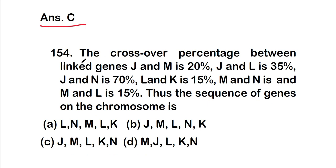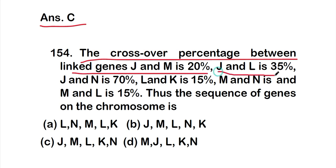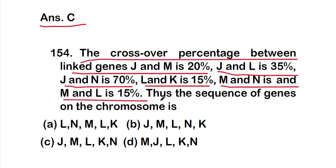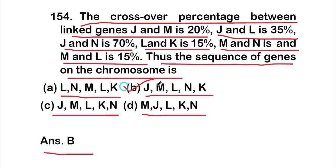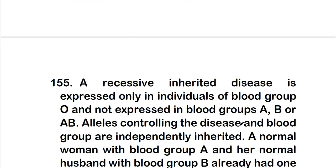Question 154: The crossover percentages between linked genes are — J and M: 20%; J and L: 35%; J and N: 70%; L and K: 15%; M and N: 10%; M and L: 15%. Based on these percentages, the sequence of genes on the chromosome is: option A — L, N, M, L, K; option B — J, M, L, N, K; option C — J, M, L, K, N; option D — M, J, L, K, N. The correct answer is option B — J, M, L, N, K.